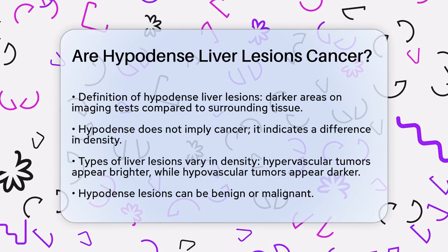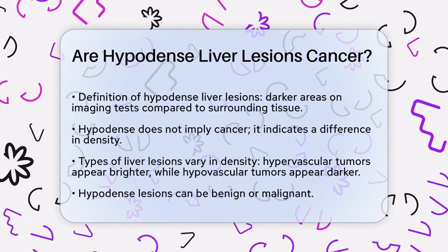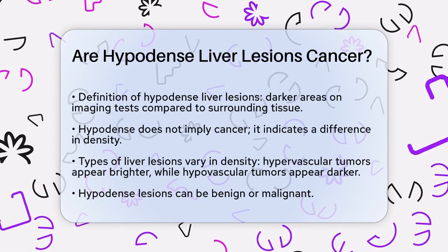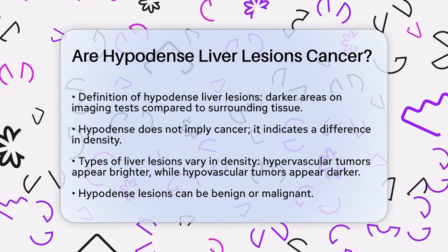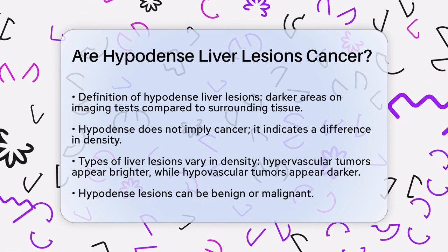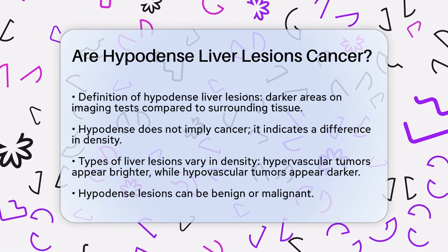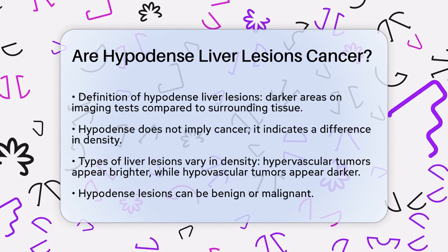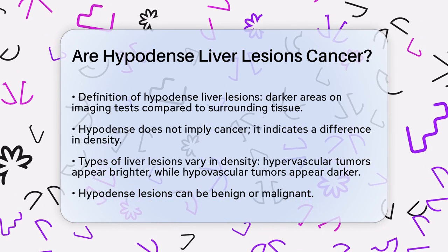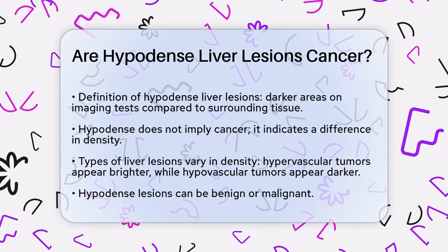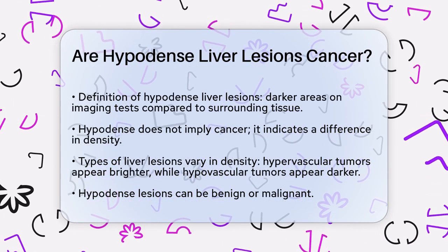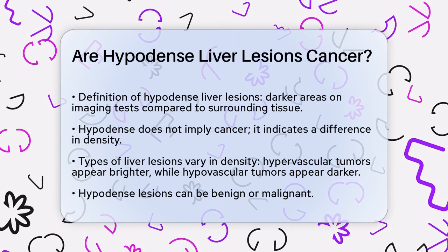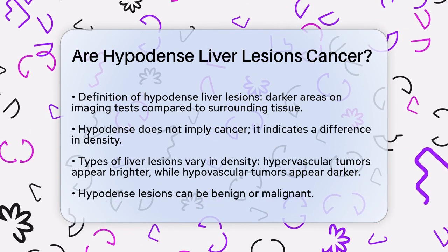First, let's define what a hypodense liver lesion is. On imaging tests like CT or MRI scans, a hypodense lesion appears darker or less dense than the surrounding liver tissue. This doesn't automatically mean it's cancerous — it just indicates a difference in density. There are several types of liver lesions and their density can vary.